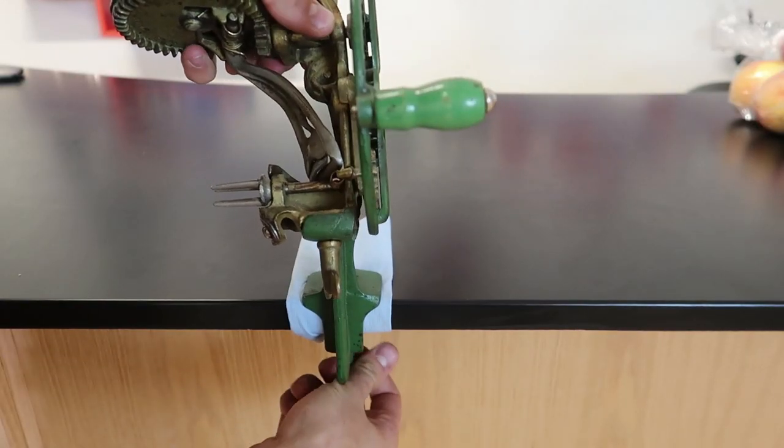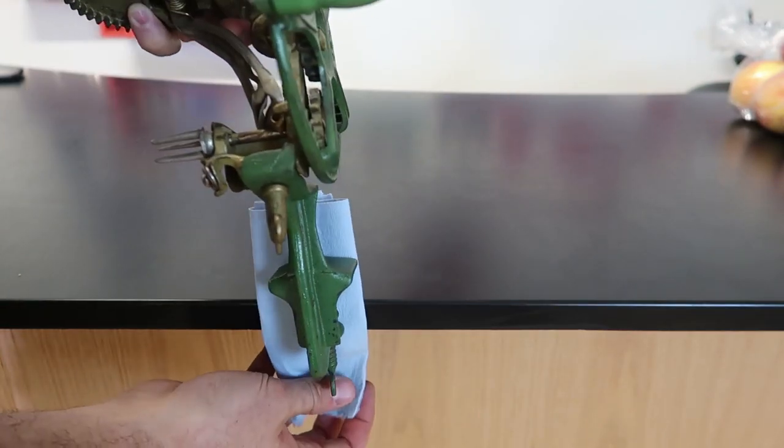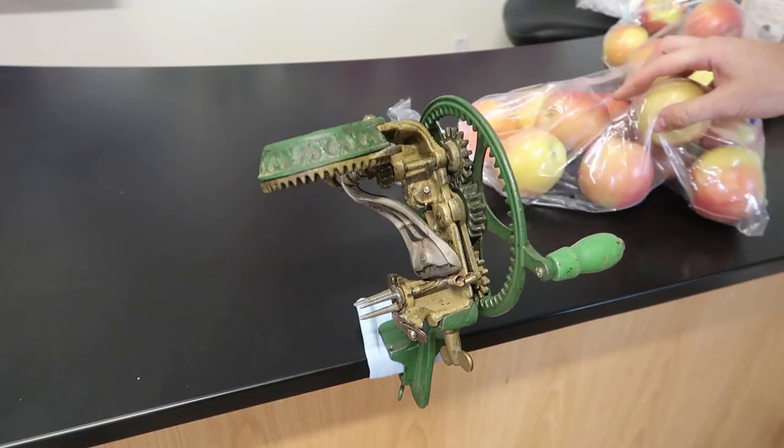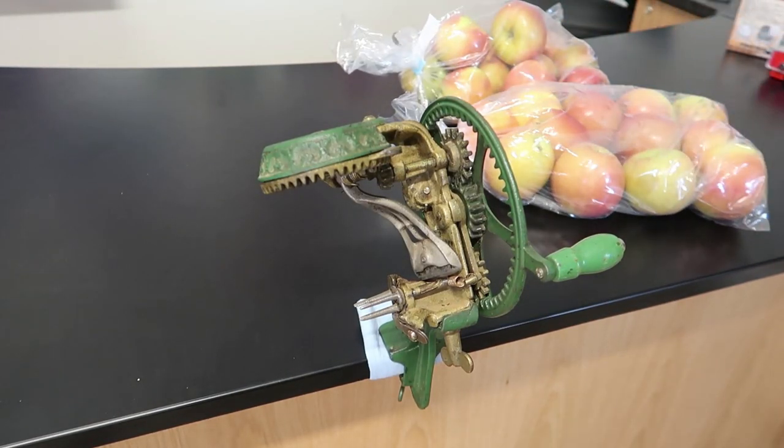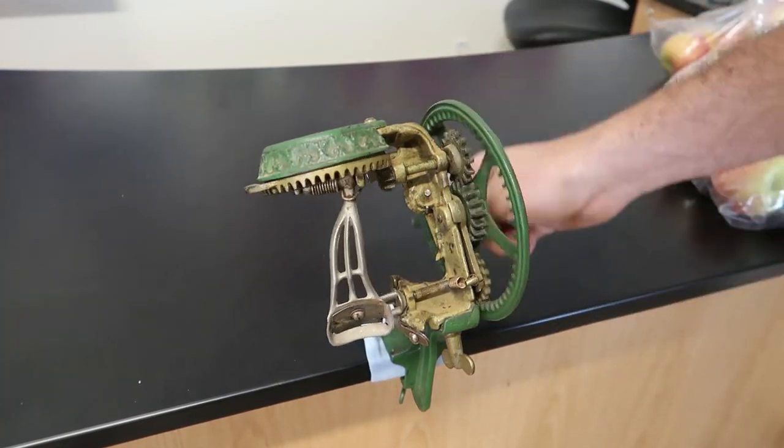This one mounts to the table. I put napkin under it so that way we're not going to mess up the table. I got bunch of apples right here, so we're going to peel whole bunch of them. Let's pin this, see how it works.